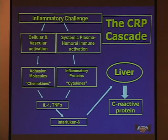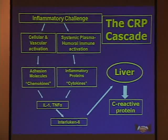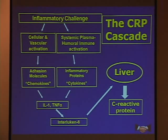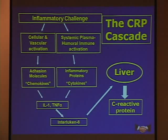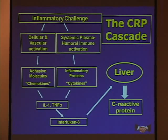When we talk about the acute-phase reactant CRP — C-reactive protein — this schematic shows the cascade that happens. An inflammatory challenge provokes either a cellular or humoral response through the innate immune system, involving adhesion molecules and chemokines on cell walls, as well as humoral proteins — cytokines freely moving in tissue spaces and the bloodstream — upregulating the liver to produce C-reactive protein.